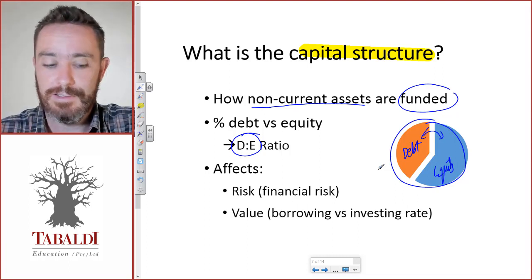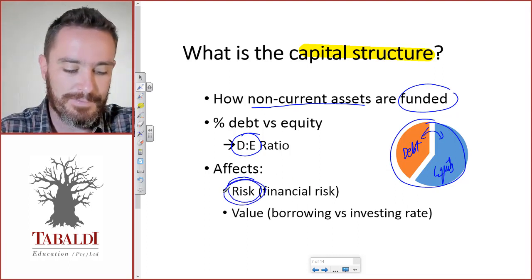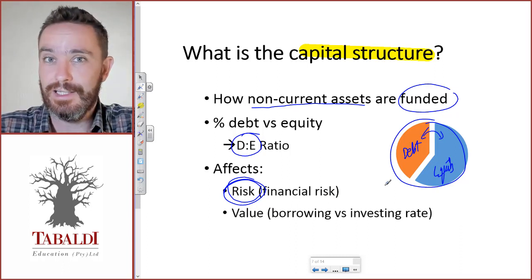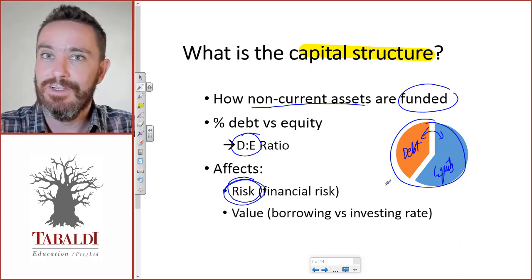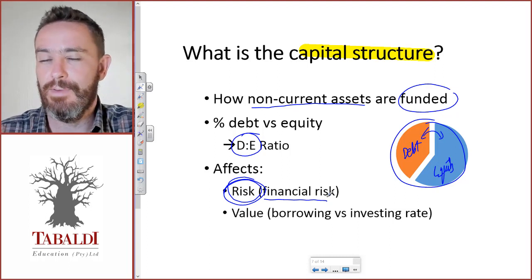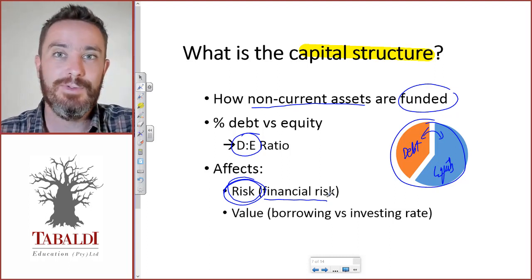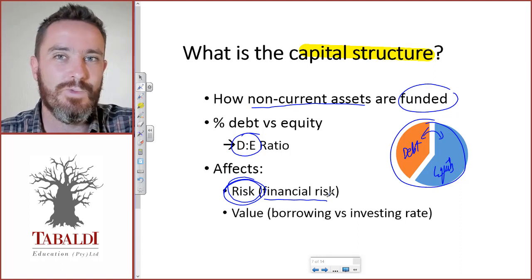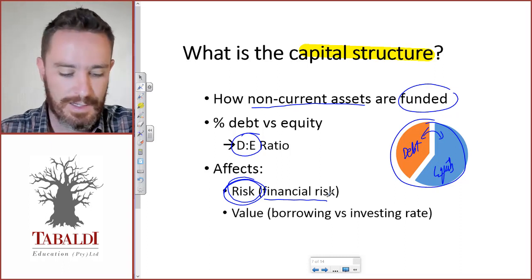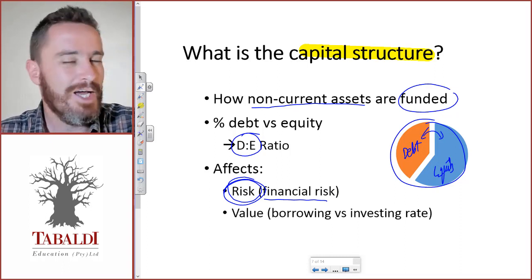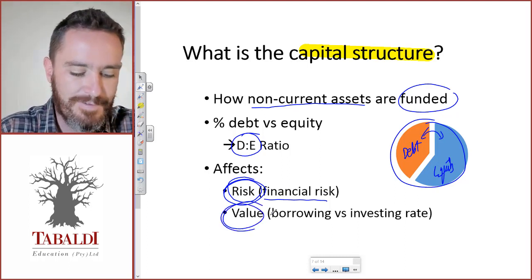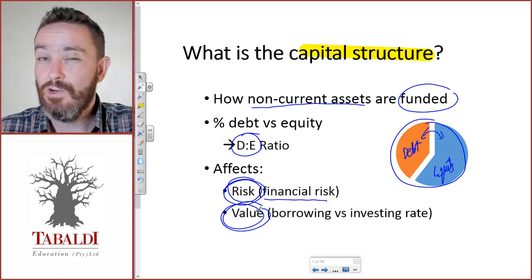Why is the capital structure important? Why is this proportion of debt versus equity important? Well, it affects two important things. First, it affects the risk of the company. If the company has a lot of debt — a high debt-equity ratio or a capital structure heavy on debt — it will increase the financial risk. Financial risk is the risk of not being able to repay the capital and the interest when it falls due, because we have to pay according to the agreement with the lenders. If we have a lot of equity, we don't have to pay dividends, so there's no financial risk in equity.